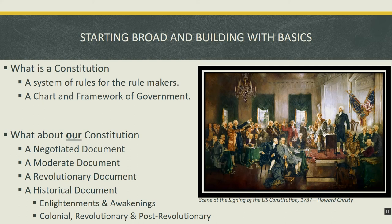In addition to creating rules for the rule makers, constitutions create a framework of government — they describe the institutional structure of government. For instance, our constitution tells us that our federal government will be divided into three separate branches, and Articles 1, 2, and 3 proceed to describe each of these branches — legislative, executive, and judicial respectively — covering what they will look like, how they will operate, and what they can and cannot do. A constitution is simply a system of rules for the rule makers and a description of the institutional framework.